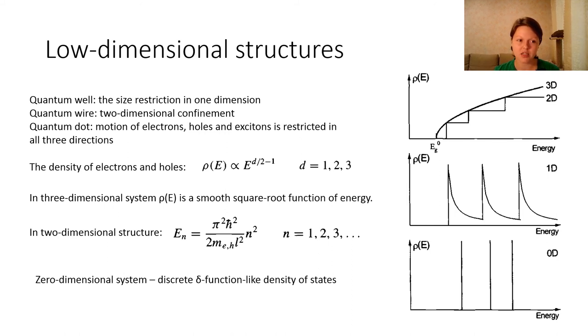The density of electrons and holes can be given as this equation, where E is the energy and D is the dimensionality of the structure. In a three-dimensional system, the density of electrons is a smooth square root function of energy, as you can see here.